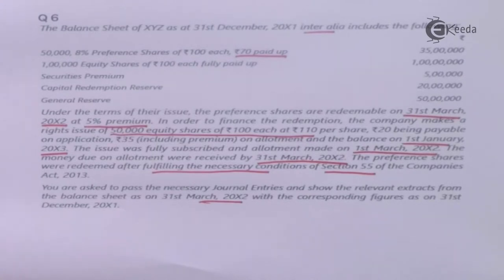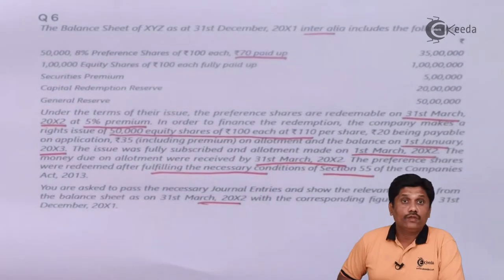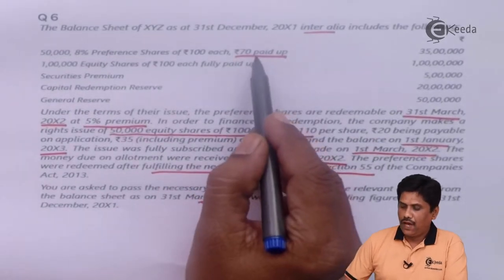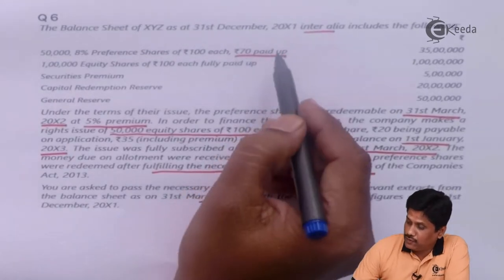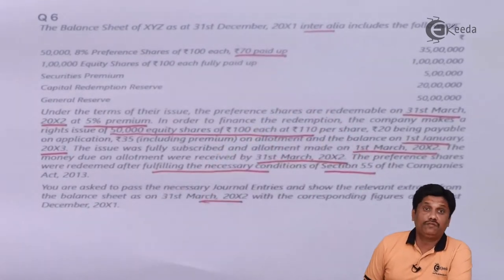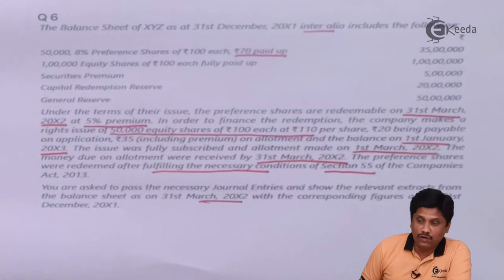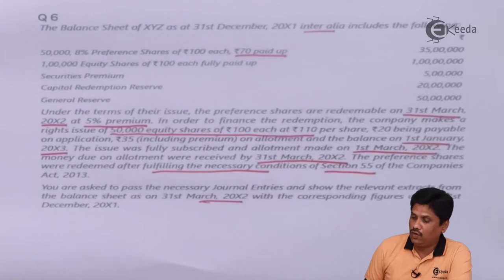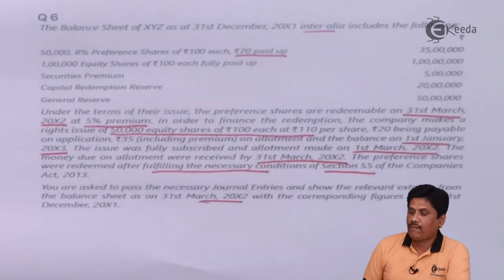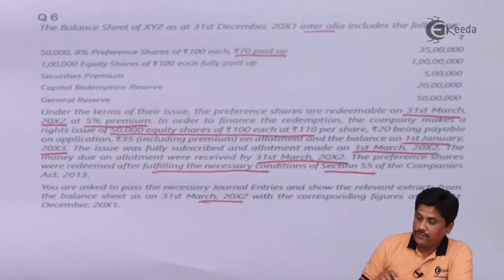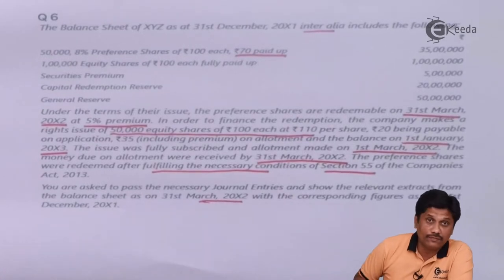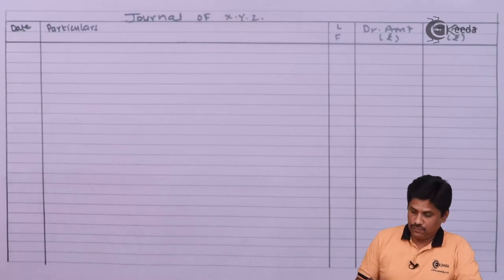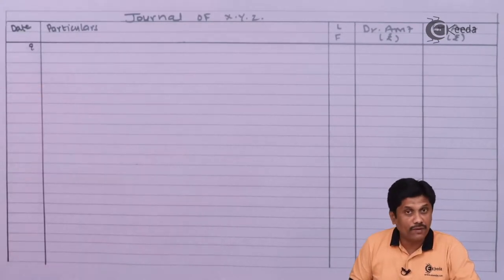Before proceeding, I will address the first part: I cannot think of redemption if my shares are partly paid. We have to make a final call on the existing preference shares to make them fully paid as required by Section 55. We don't know the exact date the final call was made on preferences, so I am putting a question mark.